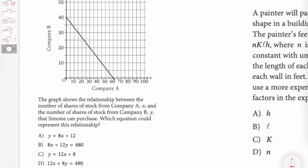The graph shows the relationship between the number of shares of stock from company A, X, and the number of shares of stocks from company B, which is signified by Y, that Simone can purchase. Which equation could represent this relationship?